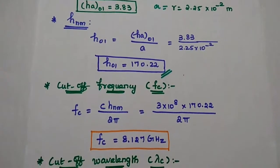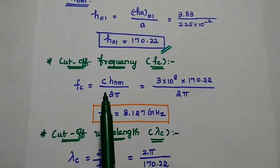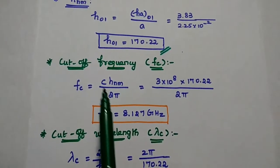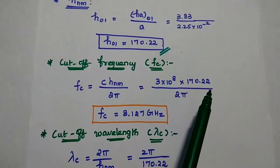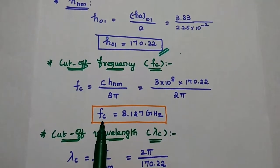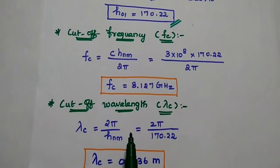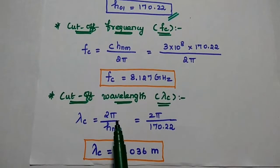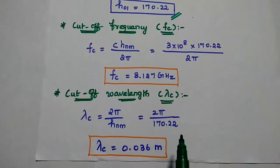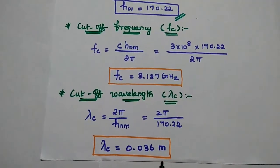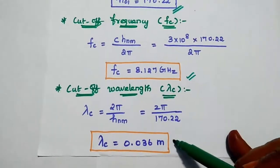Substituting into the cutoff frequency formula f_c = c × h_nm / (2·pi): f_c = (3×10⁸ × 170.22) / (2·pi) = 8.127 GHz. Next, the cutoff wavelength lambda_c = 2·pi / h_nm = 2·pi / 170.22 = 0.036 meters. We have now obtained both f_c and lambda_c.